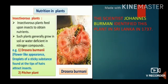Insectivorous Plants: Insectivorous plants feed on insects to obtain nutrients. These plants generally grow in soil or water deficient in nitrogen compounds. The plant body of Drosera burmannii has a flower-like appearance and grows close to the ground. Its leaves are attractively pink or red in color with hairs at the margin. Droplets of a sticky substance at the tip of the hairs attract insects. The scientist Johannes Burman identified this plant in Sri Lanka in 1737, and the plant is named after him.